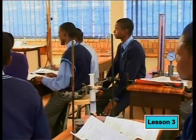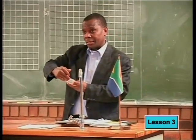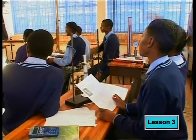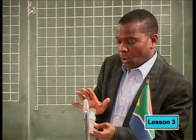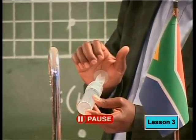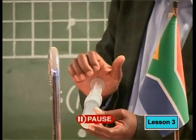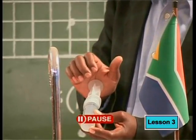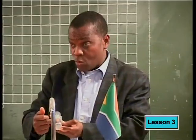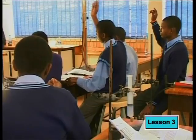Now, we have a syringe here. Inside here, what do we have inside the syringe? We have a trapped gas inside the syringe. Now I'm going to exert pressure by pushing on this piston. What do you think would happen as I increase pressure on this piston? What would happen to the volume inside here? The volume will decrease.